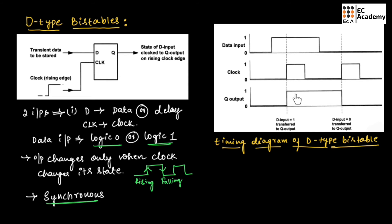This output will remain 1 until we apply the next clock pulse. For the next clock pulse, at the rising edge of the clock, correspondingly we are having the input as low, which is 0. So that signal will appear at the output for the rising edge of the clock. This is how the D flip-flop or D bistable will operate.